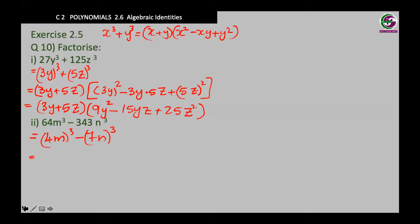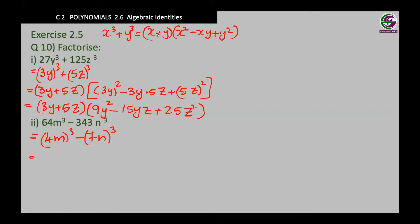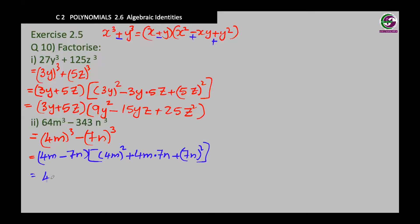This is in the same form, but notice there is a minus in the middle. If you have a minus, the first bracket will be the first term minus the second term without any power, and the second bracket will be all positive: first term squared plus first term times second term plus second term squared. Expanding: second bracket gives 4m squared is 16m squared, plus 28mn, plus 49n squared.